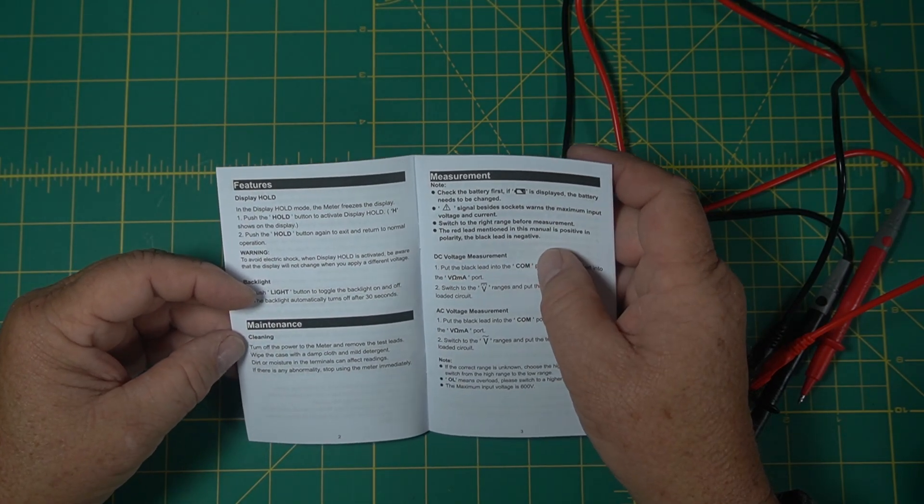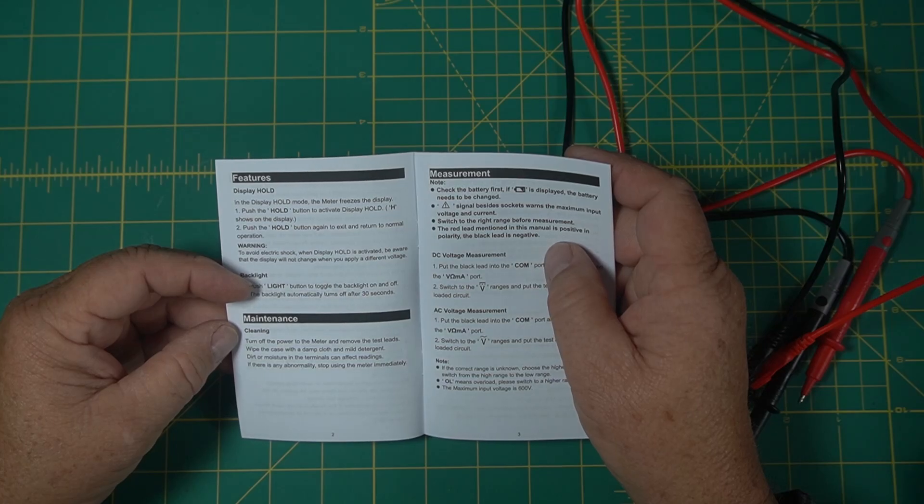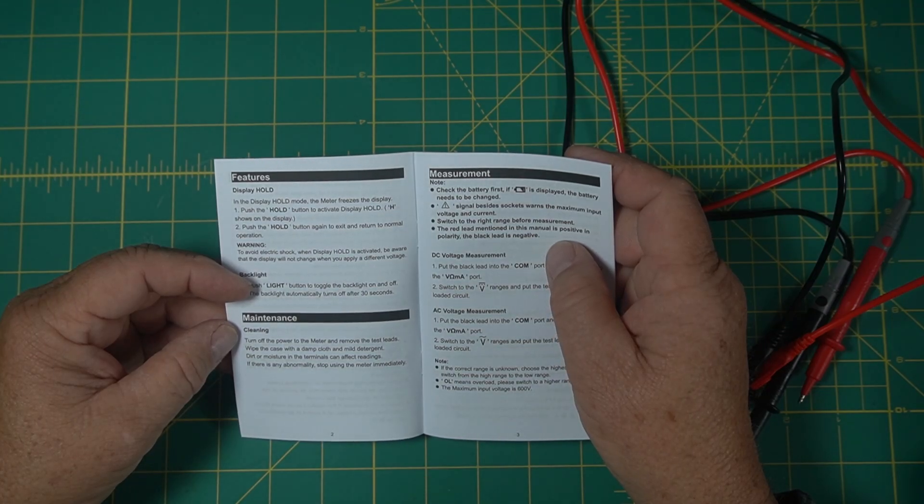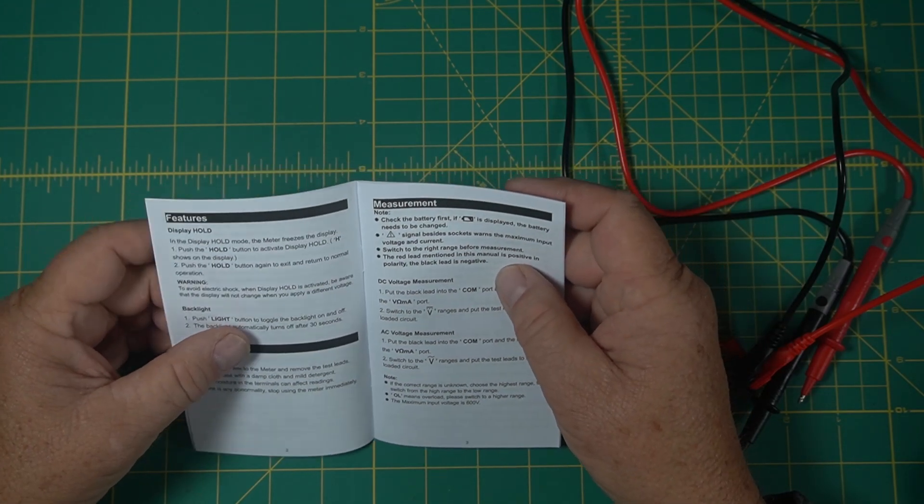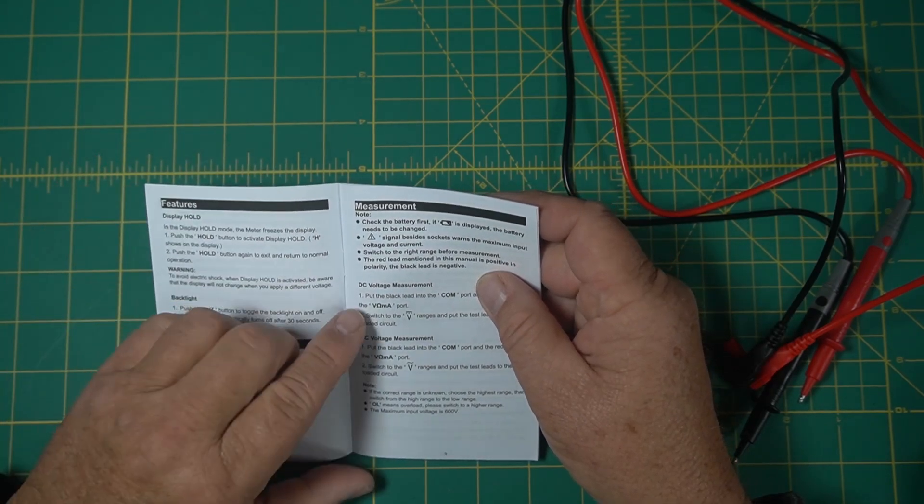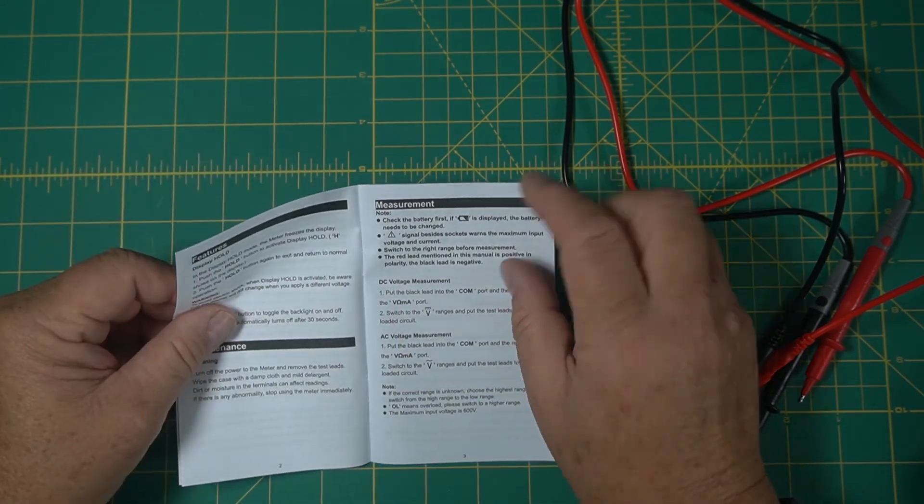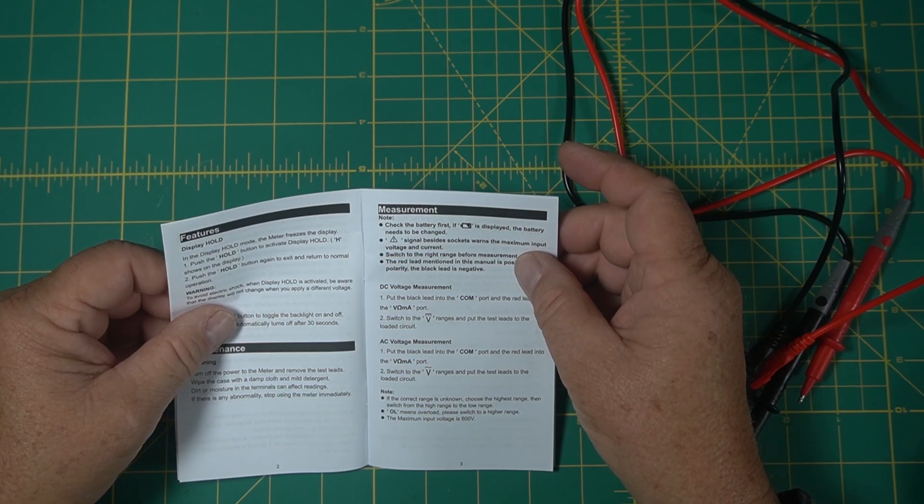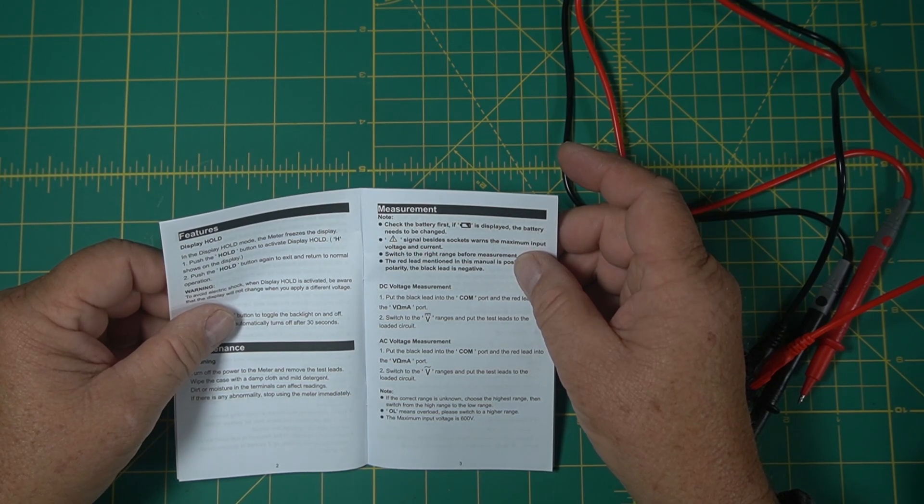It says when you're cleaning this, make sure you turn off the meter. Remove all the test leads with a damp cloth and mild detergent. It looks like it has a battery display on there. Lets you know how charged your batteries are and whether they need to be changed.